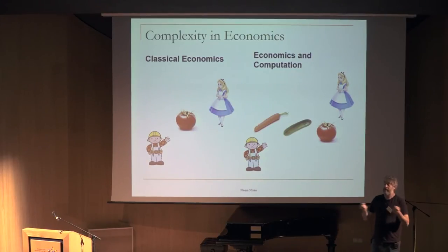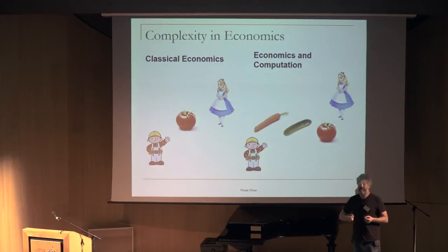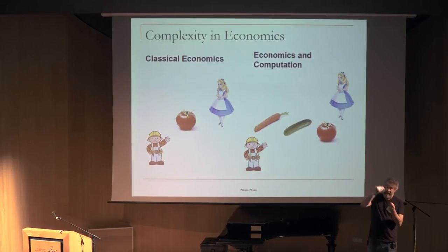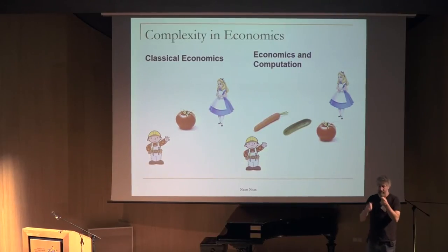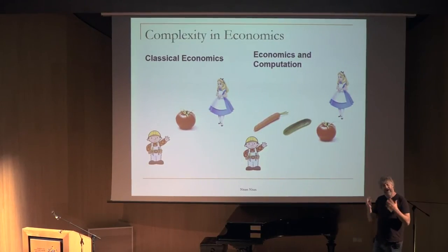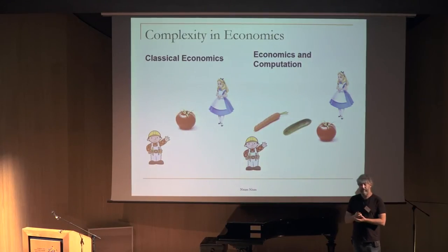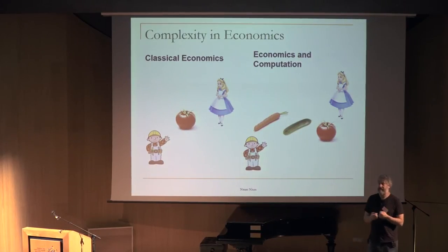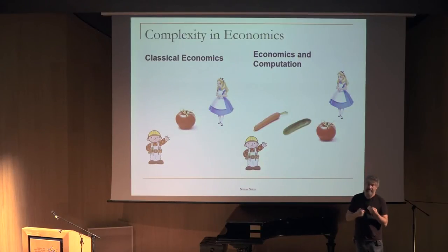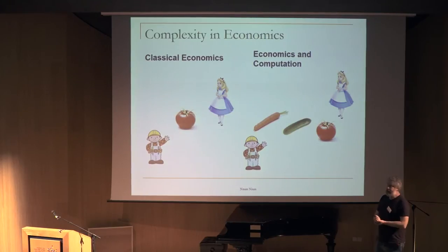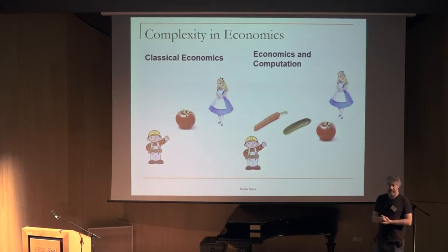For example, when you sell in a combinatorial auction with lots of items — if you sell one item, you have a nice supply graph and demand graph and get strong insights about price formation. But if you have many items, you're really interested in the difficult connections between them and how one influences the other.